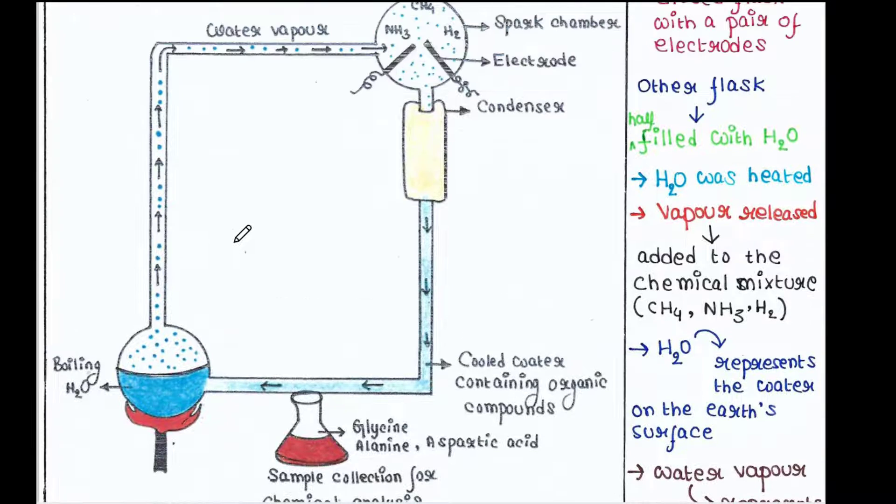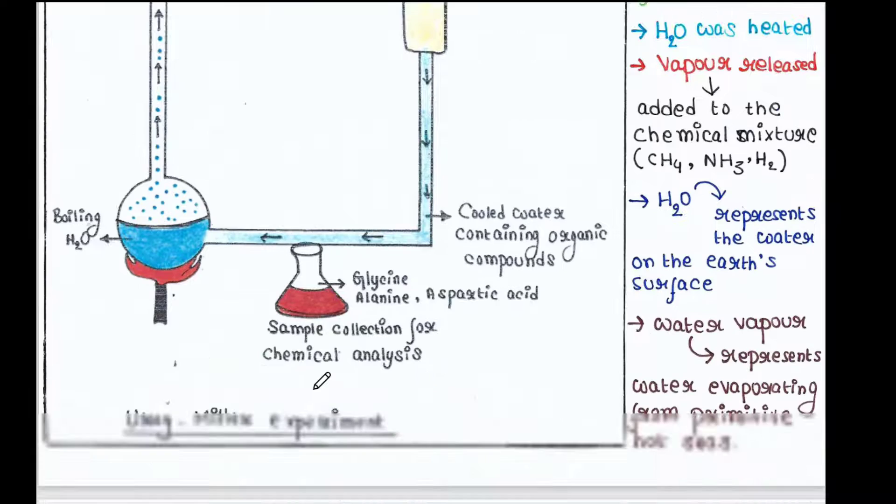And these condensed water come to this water flask in a continuous cycle. Actually, this condensed water represents rain. Primitive rain used to fall and mix with sea water.